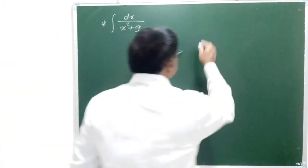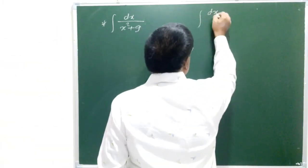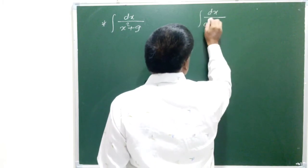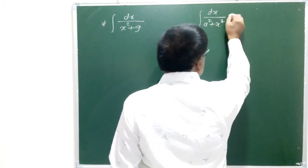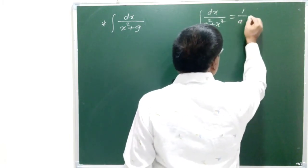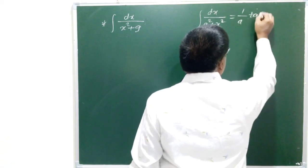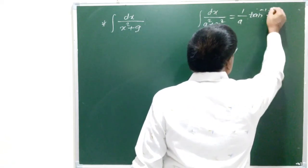This function can be converted into this standard format that is dx upon a square plus x square. And the formula is 1 by a tan inverse x by a plus c.